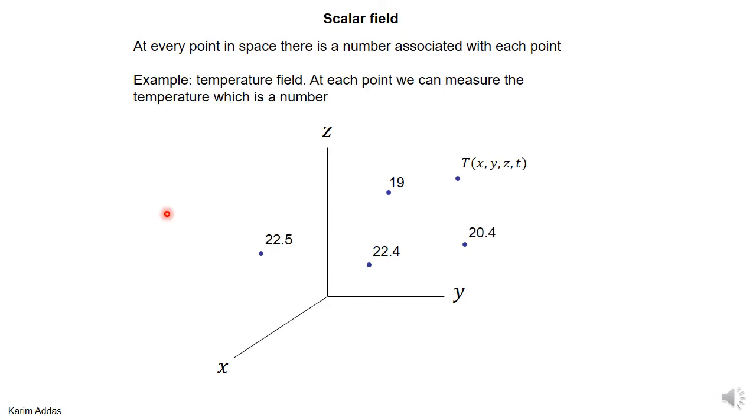Well, of course, I think a simple example is a temperature field. If you get a thermometer and you put the measuring point of the thermometer at this point, it will give you a number. If you put the thermometer at this point, it will give you another number and so on. So every single point in space can be associated with a value of the temperature.